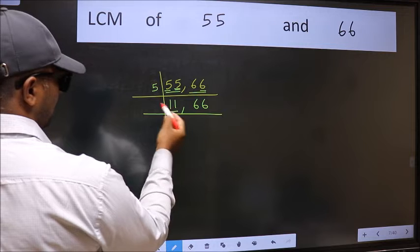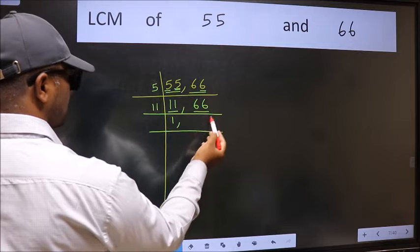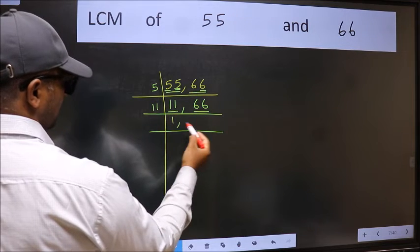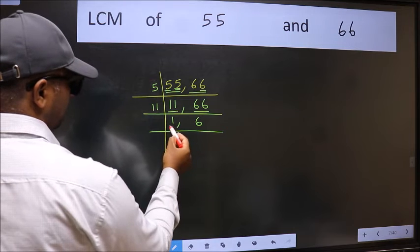Now here we have 11, 11 is a prime number, so 11 once 11. The other number 66, when do we get 66 in 11 table? 11, 6, 66. Now we got 1 here.